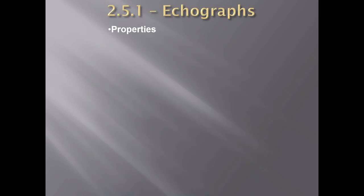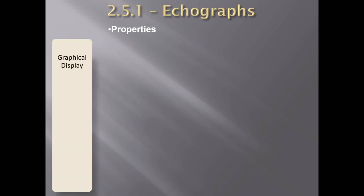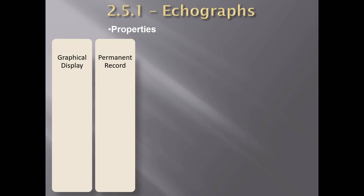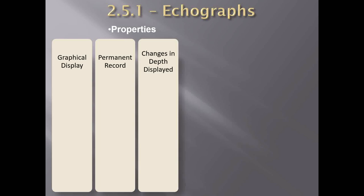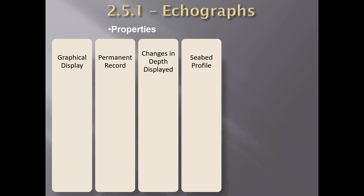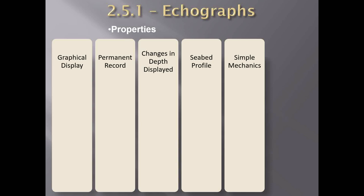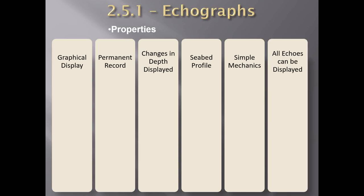Most of the echoes are displayed — sometimes even echoes of fish or schools of fish are displayed as well. These are the advantages and properties of echo graphs: they provide a graphical display of the depth, a permanent record to show in case of investigations, change in depth is displayed, seabed profile can be displayed, it works on simple mechanics, and all echoes are displayed.